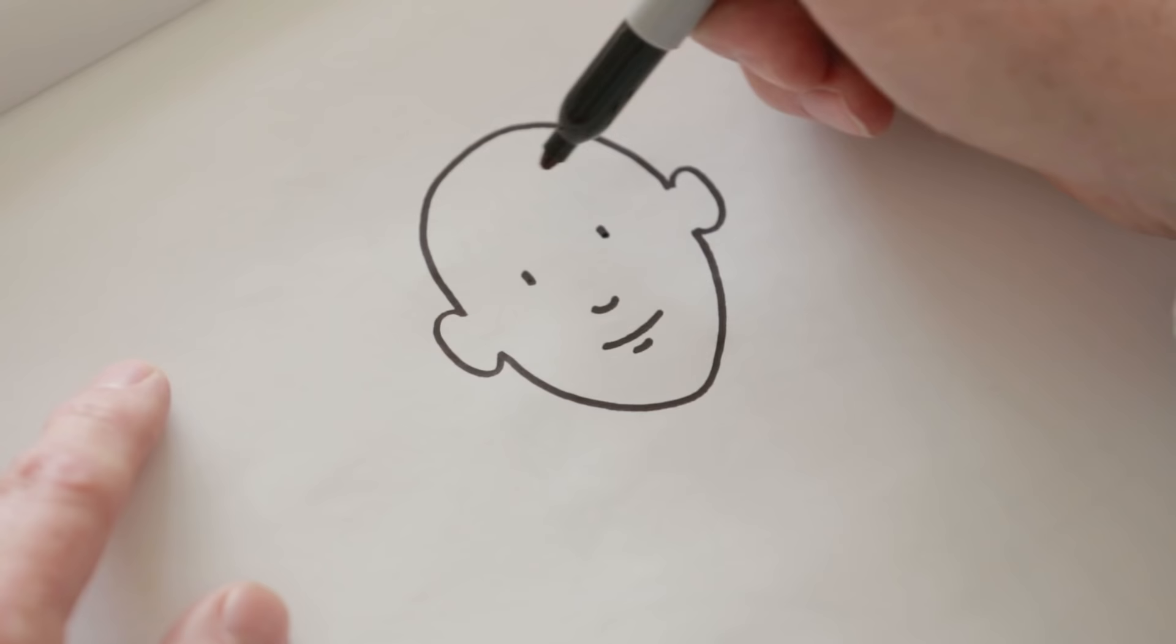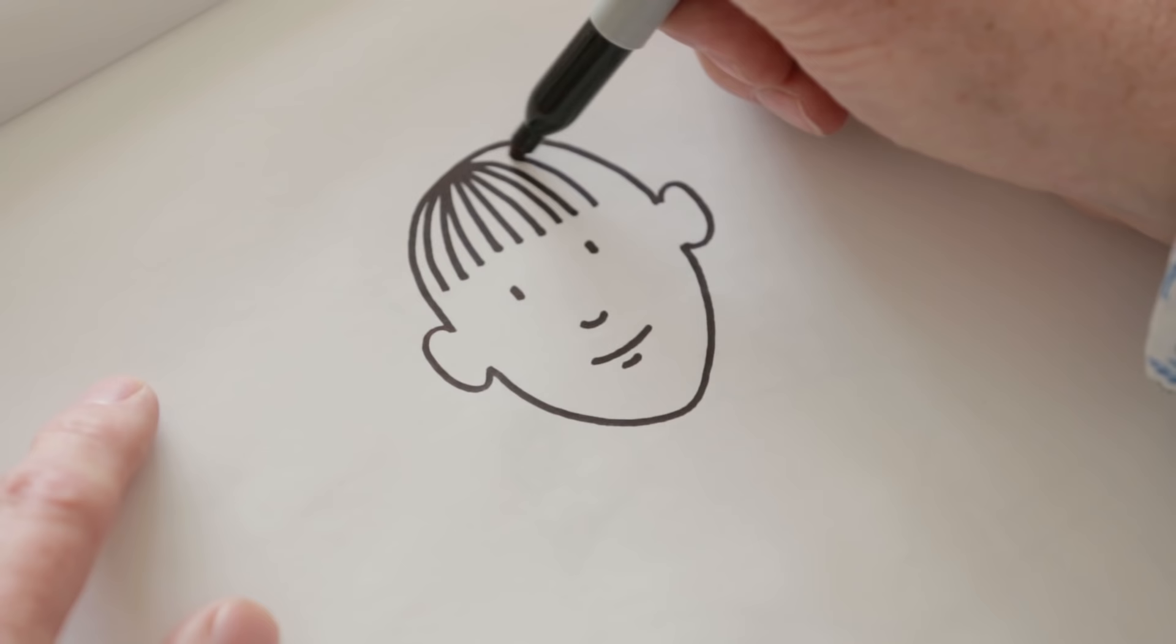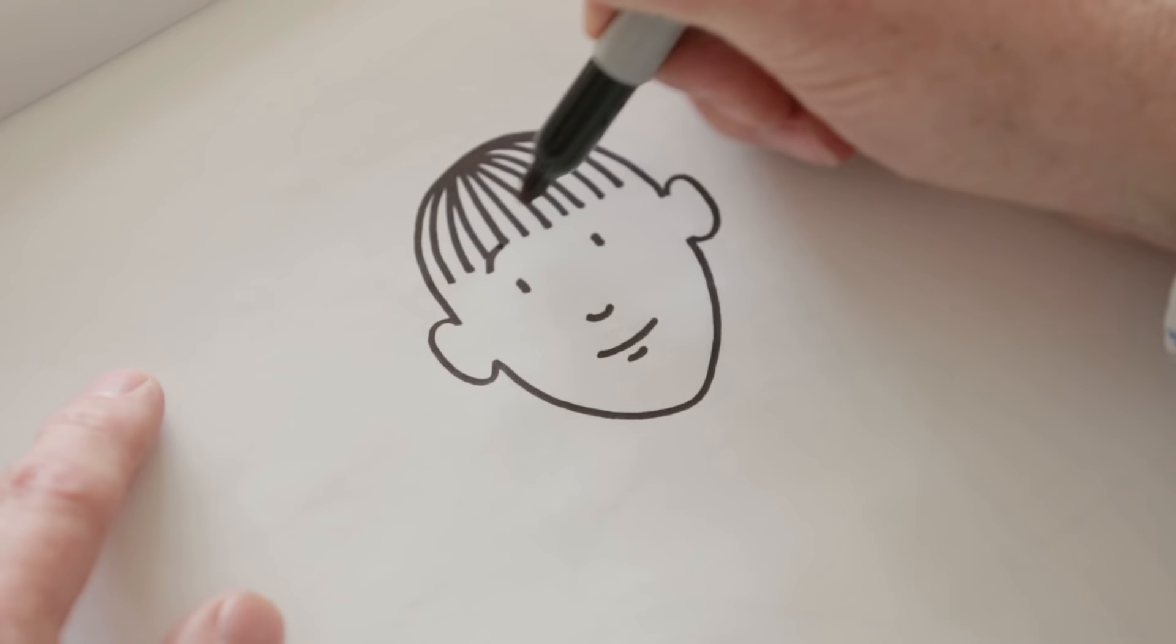So then I'm going to give her a fringe. Now Hetty has got magnificent red hair if you're colouring in your picture later on. And I'll give her two eyebrows.